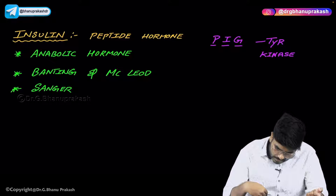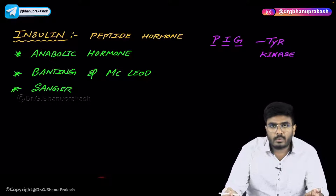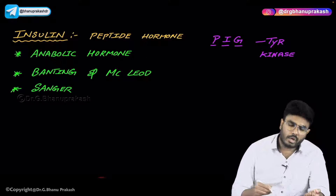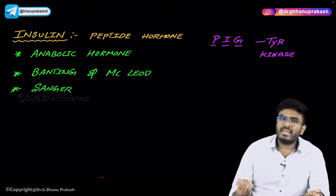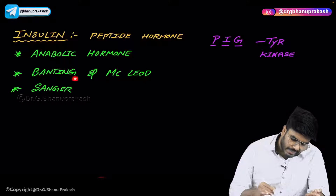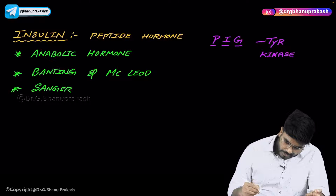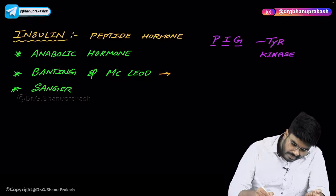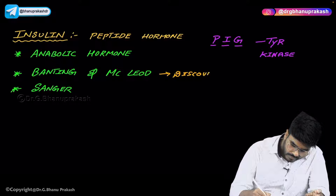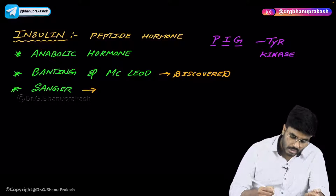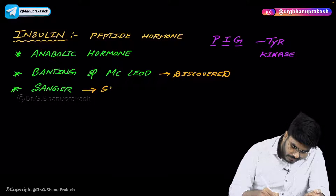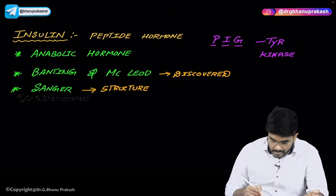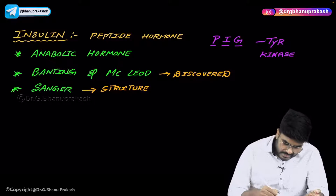Thyroid hormones are catabolic hormones, but insulin is an anabolic hormone. Banting and McLeod are the scientists who discovered insulin, and Sanger is the person who described the structure of insulin.